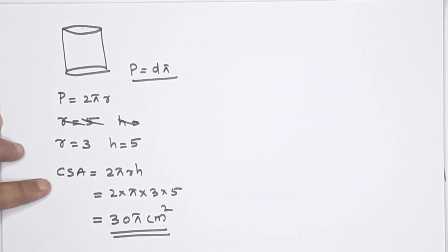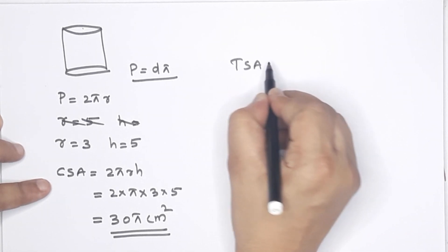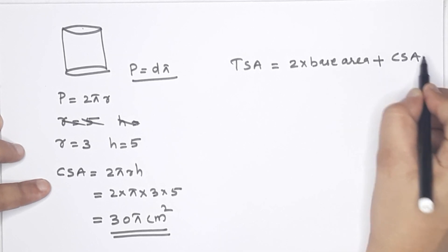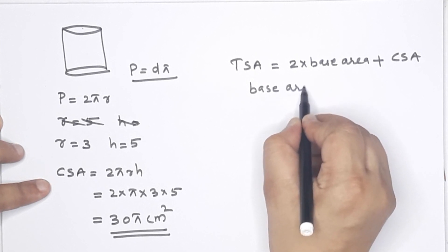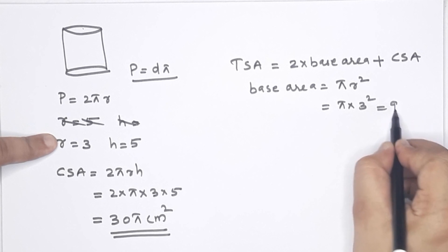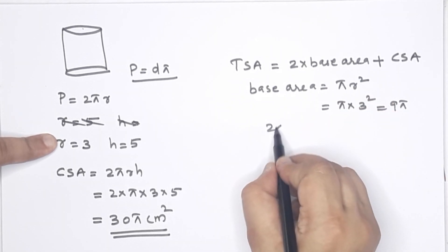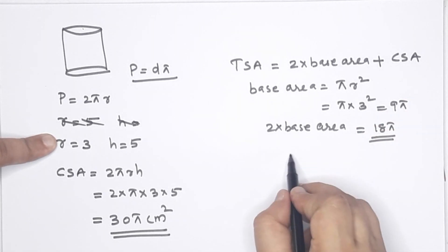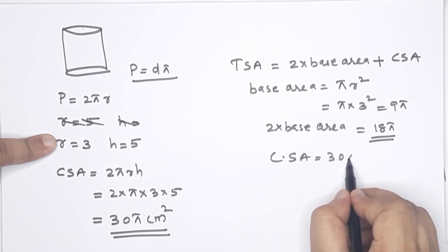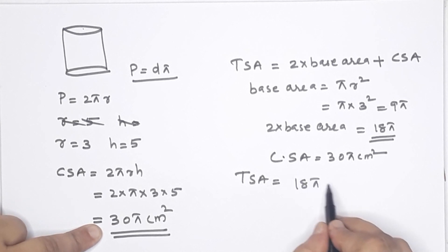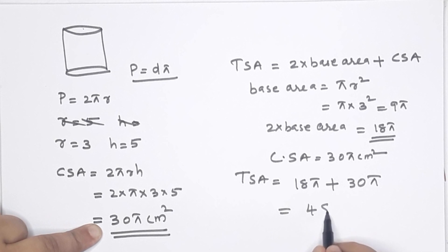Now for the total surface area of this cylinder. TSA equals 2 into base area plus CSA. Base area is πr² — that is π into 3² equals 9π. So 2 into base area equals 18π centimeters squared. CSA equals 30π centimeters squared. Therefore total surface area equals 18π plus 30π, that is 48π centimeters squared.